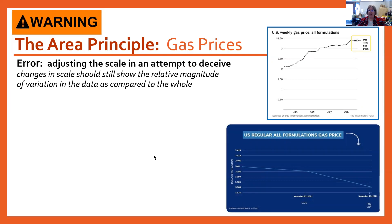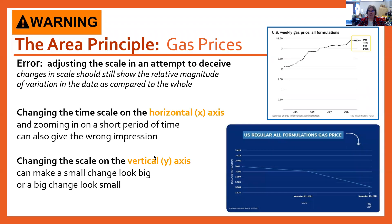Adjusting those axes can really do a couple of different things. If you're changing the horizontal axis — the x-axis — and you change that time scale, you can zoom in on a small period of time that shows just what you want to show.